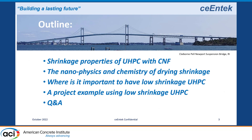I want to start off by talking about UHPC at the macro level, move into the micro and down into the nano level, and then back up and end at the macro level. I'm going to talk about UHPC containing carbon nanofiber, then get into the nanophysics of shrinkage, then discuss some important properties where we need low shrinkage UHPC, and finally show a project example of shrinkage properties on a specific project.